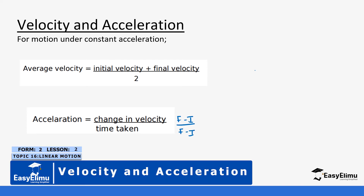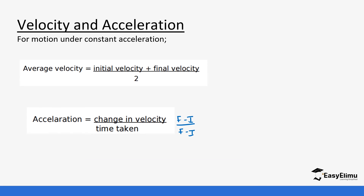Keep that in mind. Unlike the average velocity where we look at initial plus final divided by 2, for the change you look at final minus initial — both for the time and velocity. So keep that in mind.